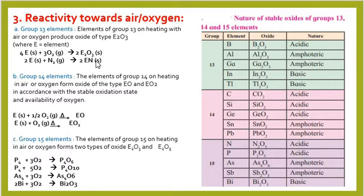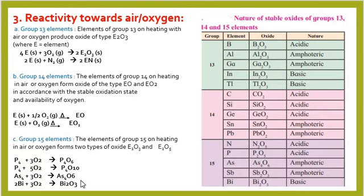Group 14 elements, on heating in air or oxygen, form two types of oxides: EO and EO2, according to the stable oxidation state and availability of oxygen. Group 15 elements on heating in air form two types of oxides: E2O3 and E2O5. For example, phosphorus P4 on heating with oxygen may form P4O6 or P4O10. Similarly, arsenic forms As4O6 on heating with oxygen, and bismuth on reaction with oxygen forms bismuth oxide Bi2O3.